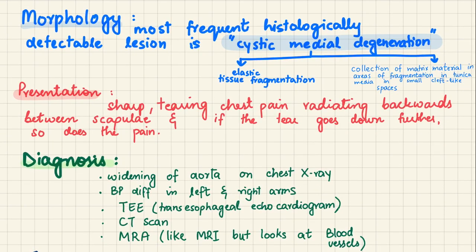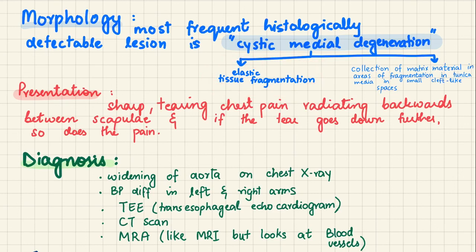Regarding morphology, cystic medial degeneration is the chief culprit. It consists of elastic tissue fragmentation and collection of matrix material within the tunica media in small cleft-like spaces. The amorphous ground substance collects in areas of elastic tissue fragmentation, giving the appearance of small cysts.